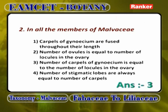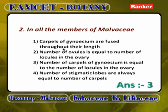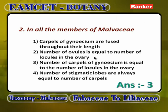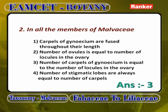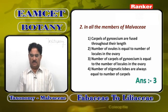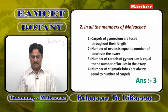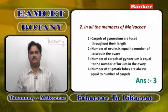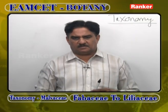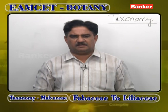In all the members of Malvaceae, carpels of the gynoecium are fused throughout their length — this is wrong because ovaries and styles are fused but stigmas are free. Number of ovules equal to the number of locules is also wrong. The correct statement is: the number of carpels in the gynoecium is equal to the number of locules in the ovary, because in Hibiscus, Gossypium, and many plants, a pentacarpellary, pentalocular condition is present — the number of carpels exactly equals the number of locules.